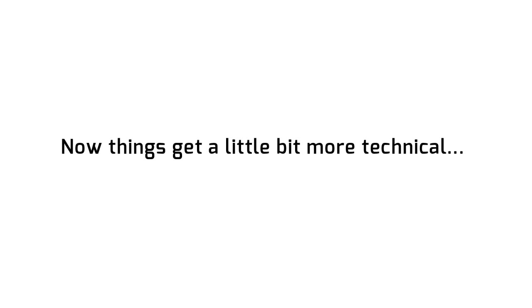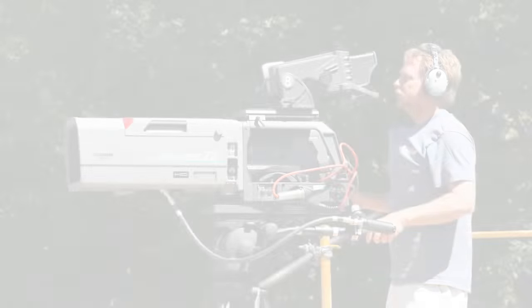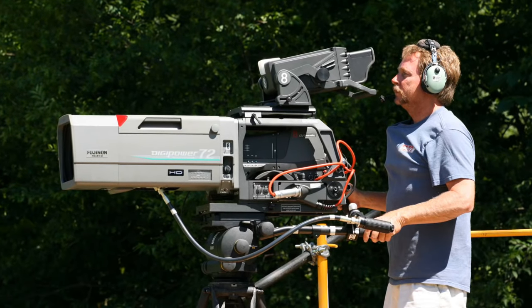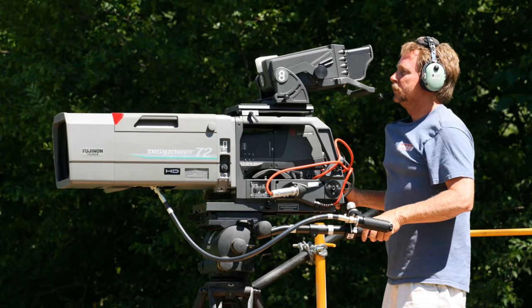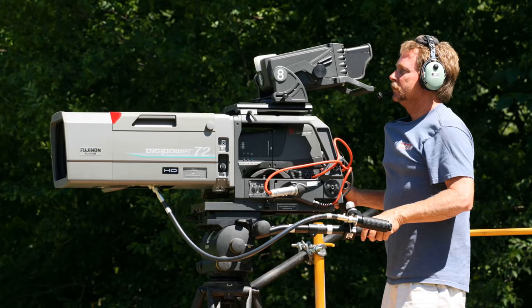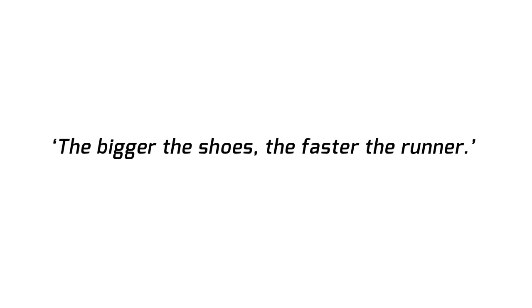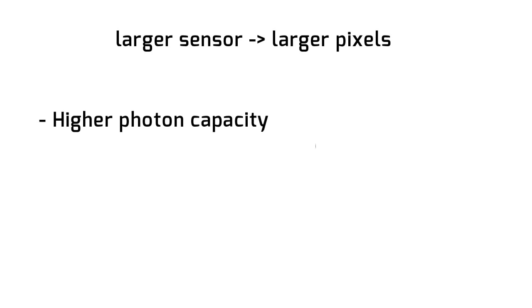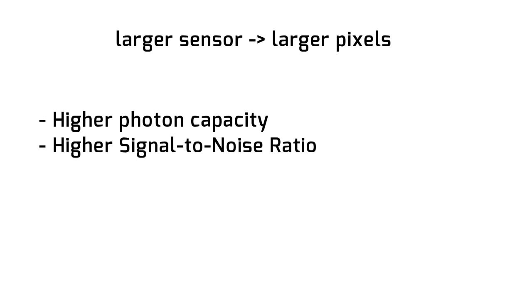Now things get a little bit more technical. The larger the camera, the larger the sensor can be. The larger the sensor, the more information it can receive from the lens, which in turn means the better the image quality. A bigger sensor usually means larger pixels, and the increased surface area means a higher photon capacity, a higher signal-to-noise ratio, and higher dynamic range to preserve the details of the image's shadows and highlights.